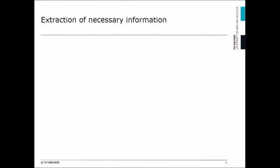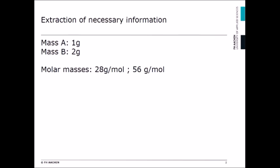Extracting our necessary information: mass A is 1 gram and mass B is 2 grams. The molar masses are 28 grams per mole and 56 grams per mole.